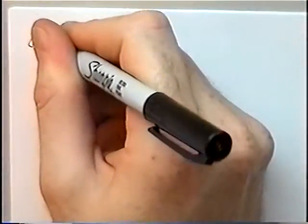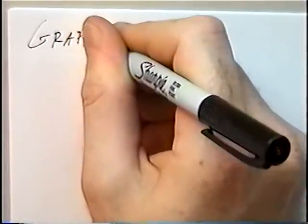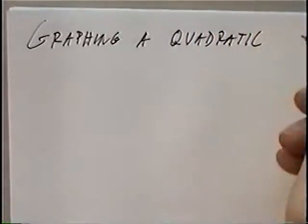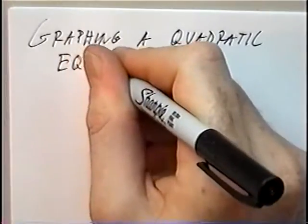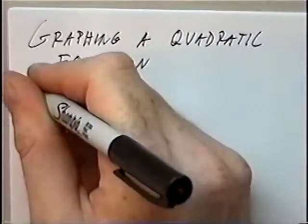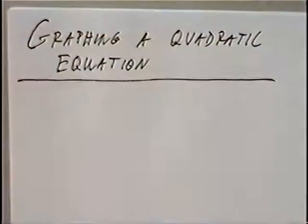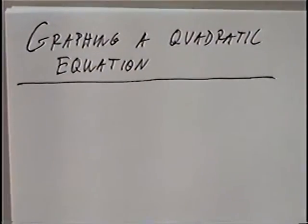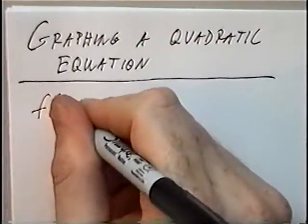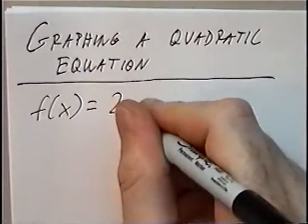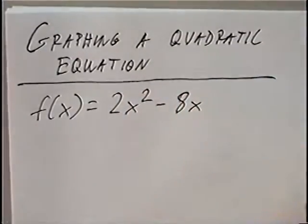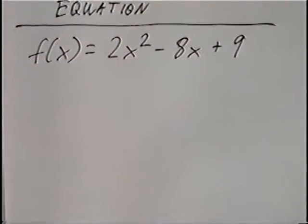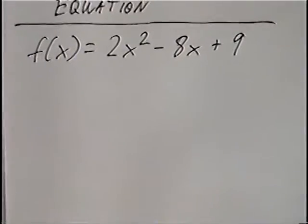The title of the first section is 'Graphing a Quadratic Equation.' In this section, we'll graph a quadratic equation, which will be the shape of a parabola. The equation for the section is f(x) = 2x² - 8x + 9. Using the previous formulas, we can find information from the quadratic equation and then graph.